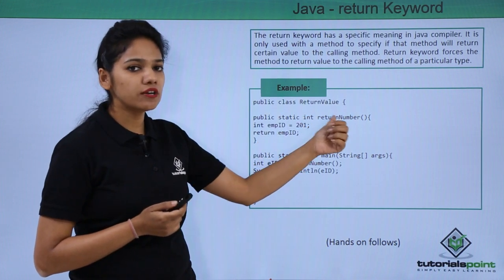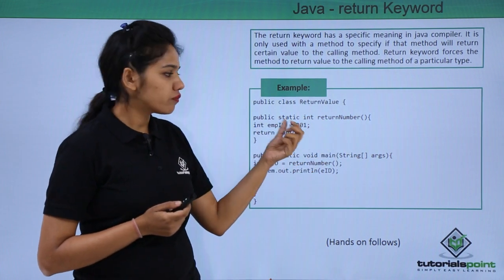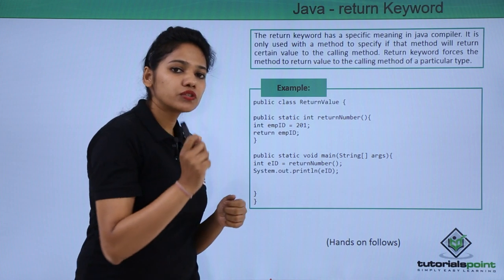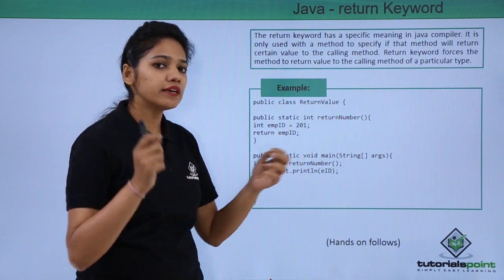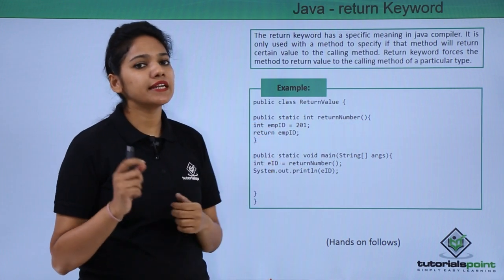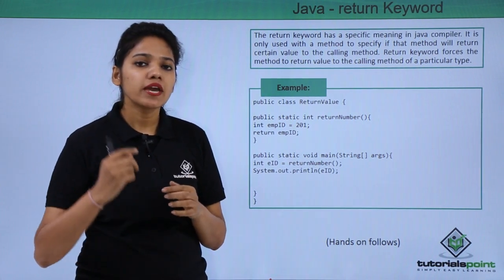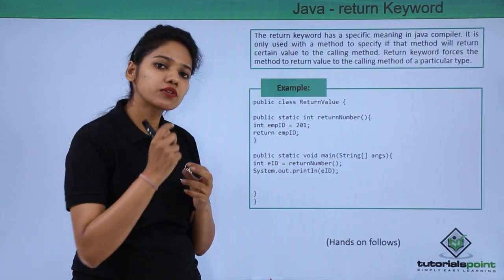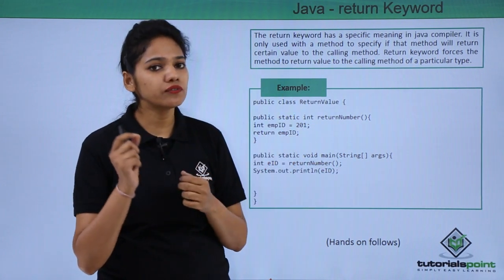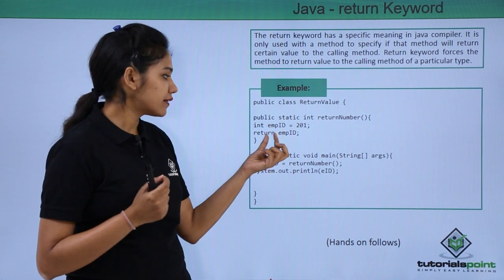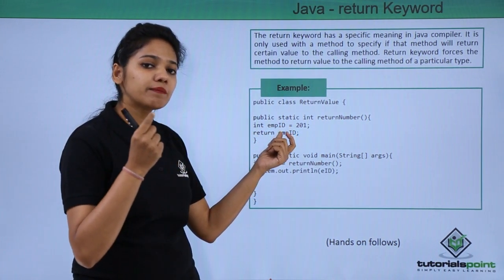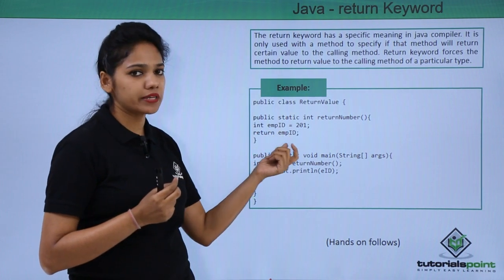We have created a class called ReturnValue, and in the method we have declared it as public static int — this method, named returnNumber, will return an integer value. In the body we have created a variable called employeeId, and we want to return this employeeId, which is of integer type, to the main method. To return the value of employeeId, we use the keyword return in lowercase, followed by the variable name holding the value.